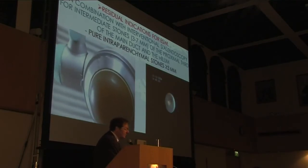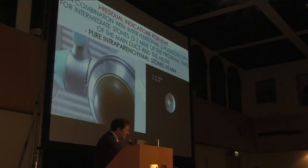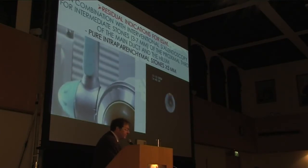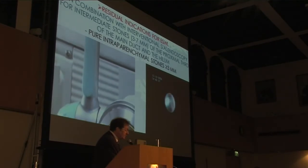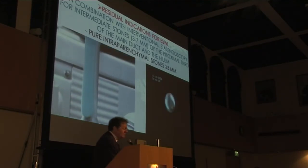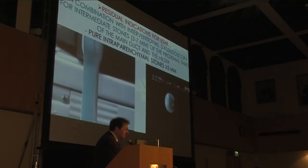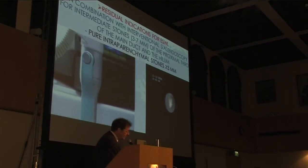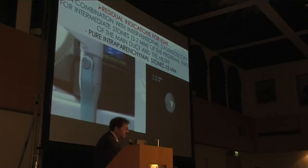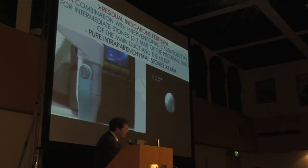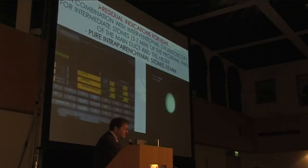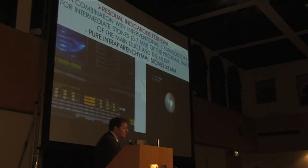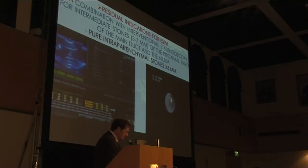Now I'm reducing my indication for extracorporeal lithotripsy. I'm using it in combination with interventional sialendoscopy for intermediate stones 3 to 7 mm of the proximal third of the main duct and the hilum. Also, I'm performing extracorporeal lithotripsy for pure intraparenchymal stones more than 3 mm as an alternative to traditional sialoadenectomy.